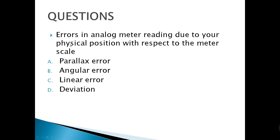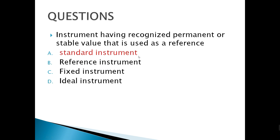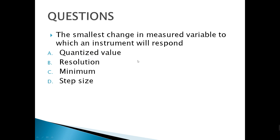Errors in analog meter reading due to your physical position with respect to the meter scale — we call that a parallax error. An instrument having a recognized permanent or stable value used as reference — those are called standard instruments. The smallest change in a measured variable to which an instrument will respond is letter B — resolution.